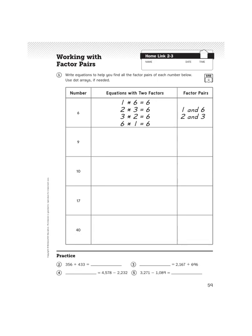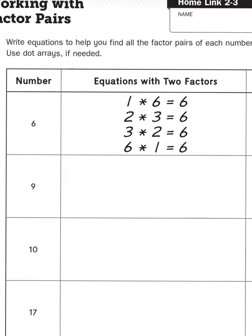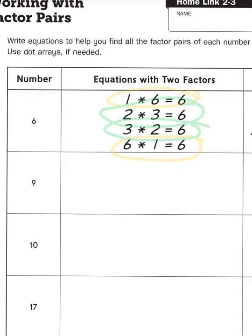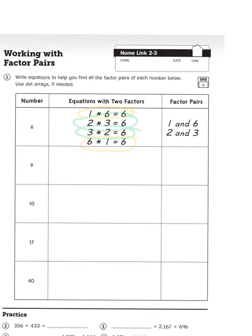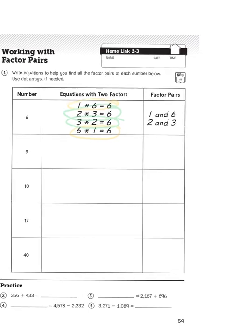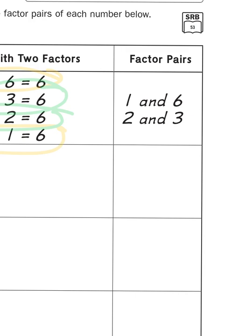So if you take a look at the example list here for six, there are four equations, or four number sentences, that give you a product of six. We've got one times six, and then the corresponding fact six times one, where we're just basically reversing the order of the factors. The same is true for two times three, and three times two.